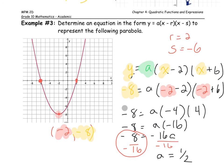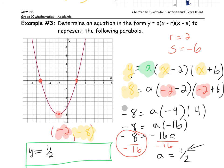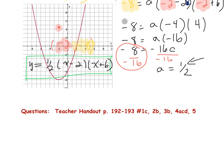Students often forget to sub the value of a back in to write the final equation. The equation ends up being y equals one half times x minus 2 times x plus 6, and there it is in factored form. I hope that example made sense. For homework, there'll be a teacher handout from a different textbook — here are the questions you should look for and attempt.